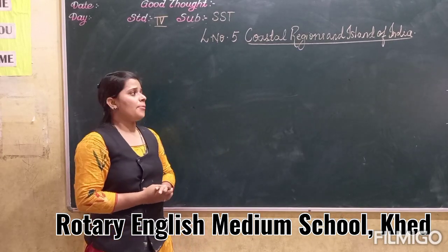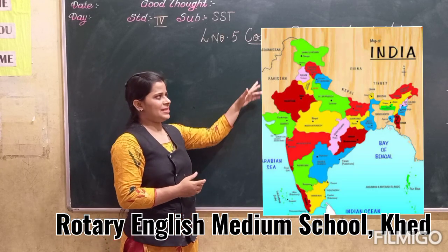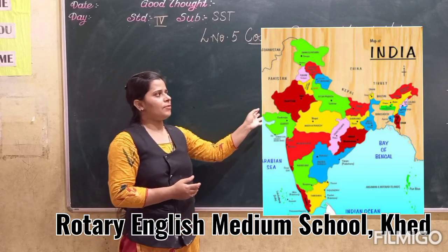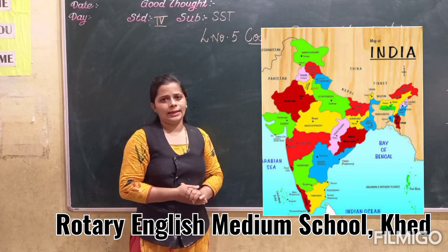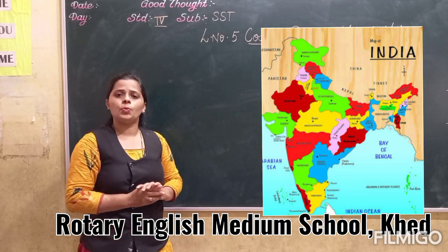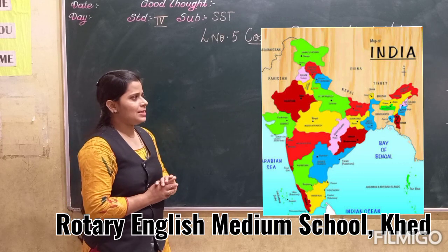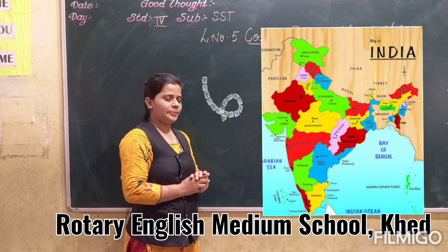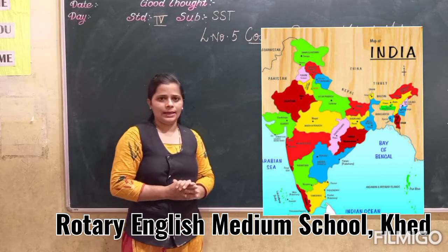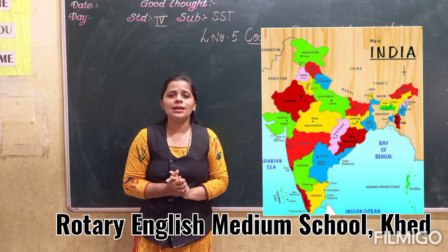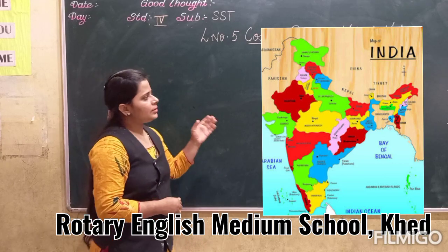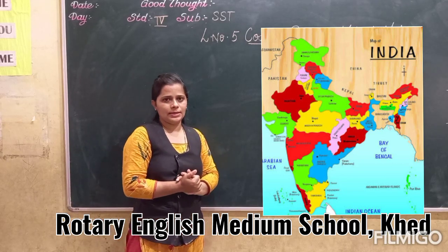Now my dear children, beside the mainland of the country, India has a group of islands. There are two groups of islands — Andaman and Nicobar, and Lakshadweep island. Let's discuss about the Andaman and Nicobar island.